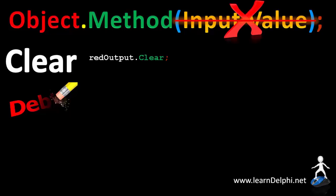This statement clears all the content from a rich edit named red output. Note that we don't have brackets and we don't have an input value. This statement clears a memo named mem info. And this statement clears a list box named lst display. You can also remove the text from an edit using the clear method. This statement clears the text from an edit named edt say hello.